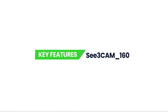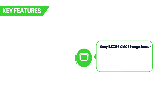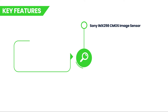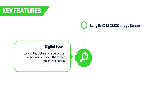Let's have a look at the key features of this camera in detail. C3 Cam 160 is designed with the Sony IMX-298 CMOS color image sensor. Its autofocus feature enables the camera to automatically adjust the lens to focus on the subject. It also comes with a digital zoom option to look at the details of a particular region of interest on the target object or surface.